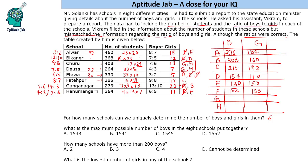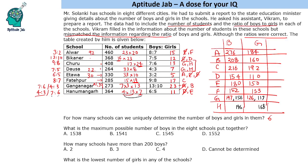For the two ambiguous schools, here are the possible values. For school G: if the ratio is 7:6 (13 parts), 1 part is 28, giving boys = 196 and girls = 168. If the ratio is 4:3 (7 parts), 1 part is 52, giving boys = 208 and girls = 156. For school H: if the ratio is 4:3 (7 parts), 1 part is 39, giving boys = 156 and girls = 117. If the ratio is 7:6 (13 parts), 1 part is 21, giving boys = 147 and girls = 126.